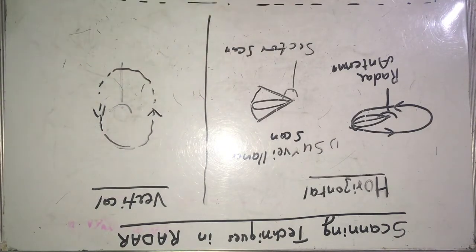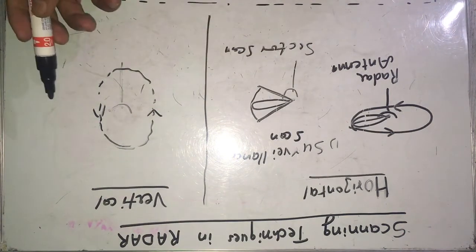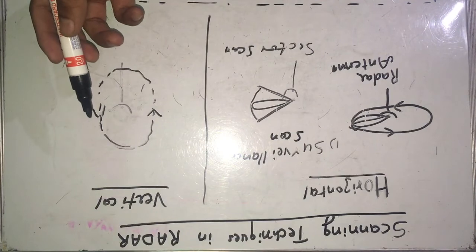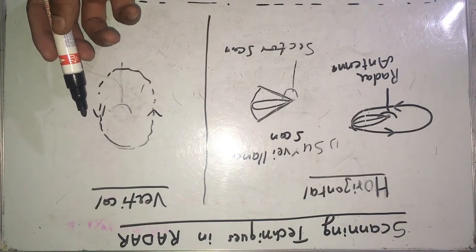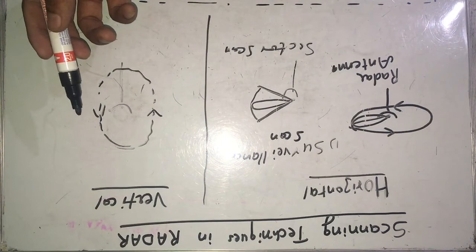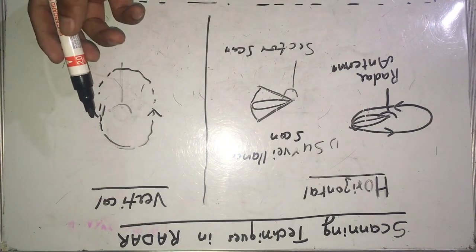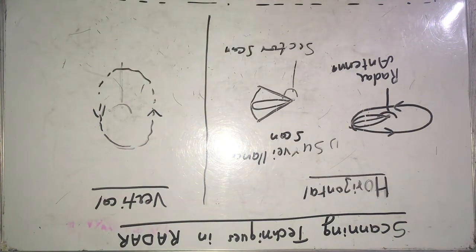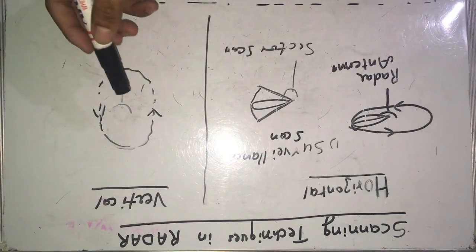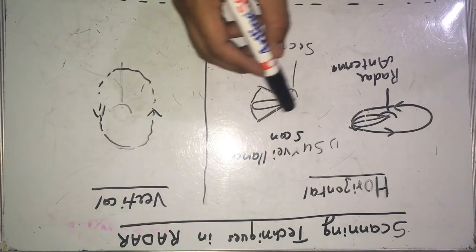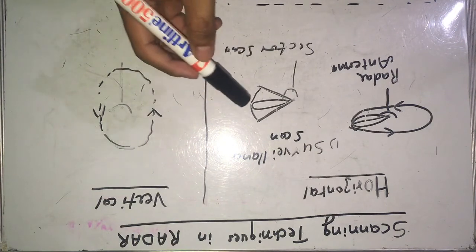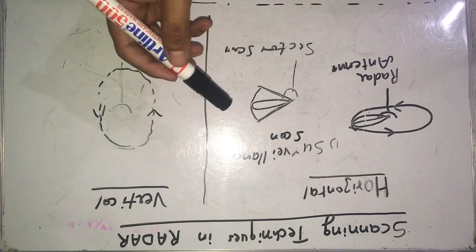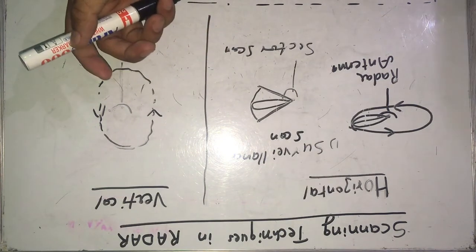This is all about horizontal and vertical scanning. In another lecture I will be covering spiral scanning and Palmer scanning. If you have any questions related to horizontal scanning and vertical scanning, you can comment or send me an email. Thank you.